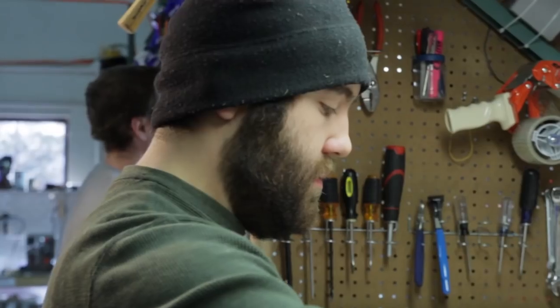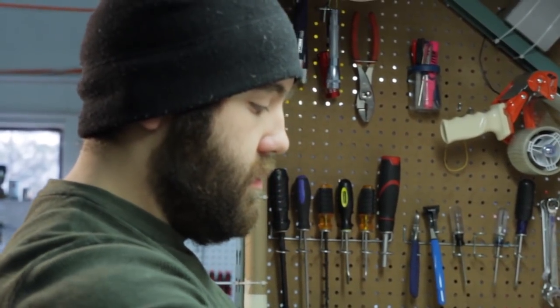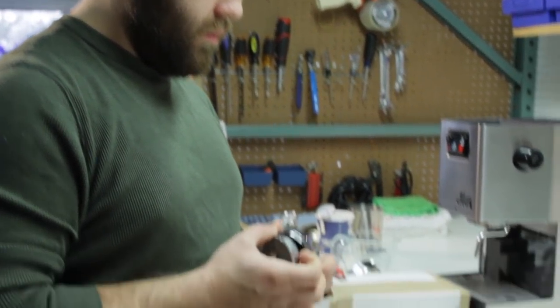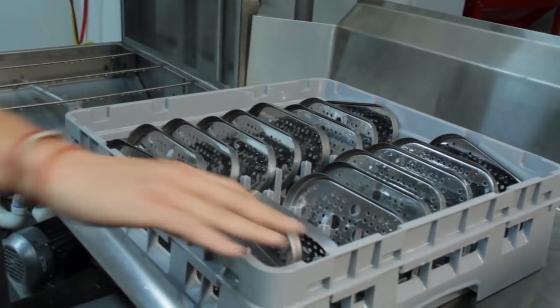When it comes in, we take it out of the box, we inspect it for damage. If everything looks good, we send it over to the refurb line and we test it and descale it if it needs it. All the accessories get separated out, brought over to the cleaning stations where we clean each one individually.